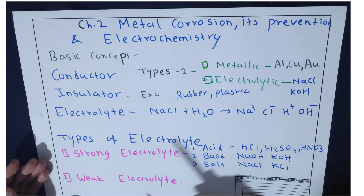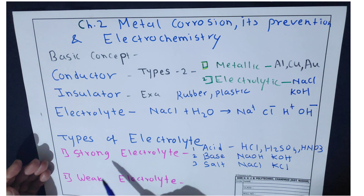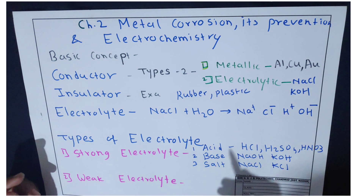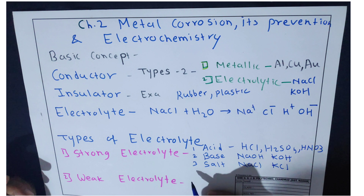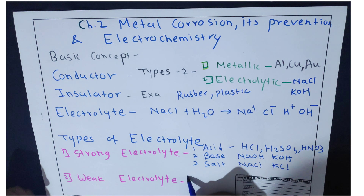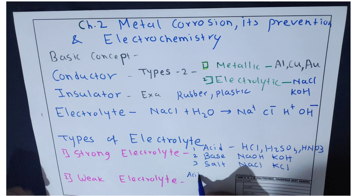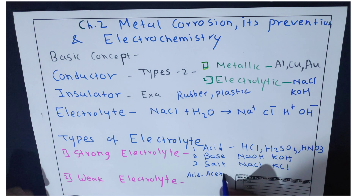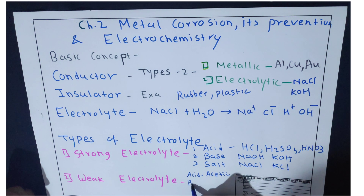Now, weak electrolytes. Examples of weak electrolytes include weak acids like acetic acid, and weak bases.